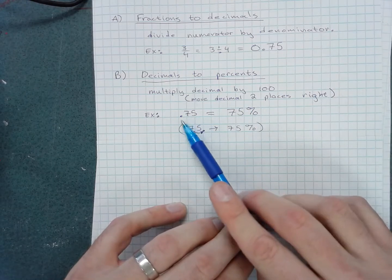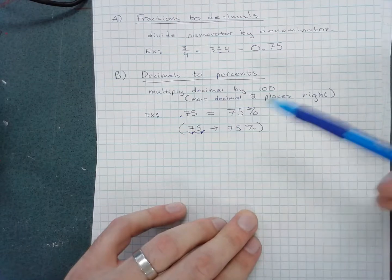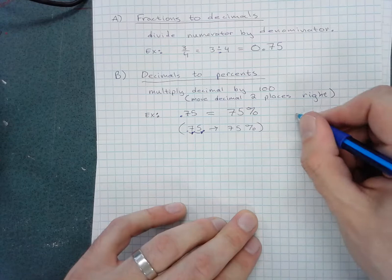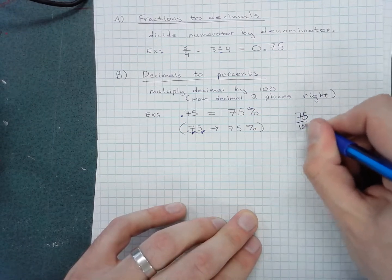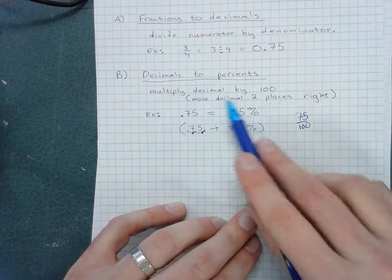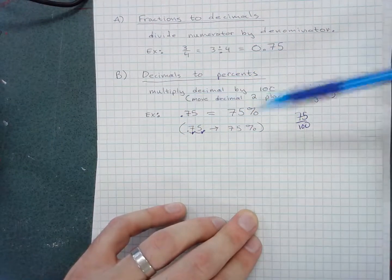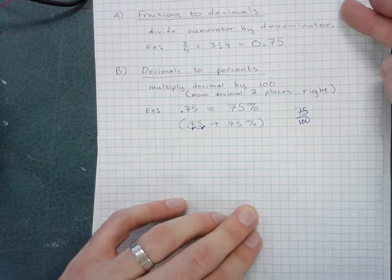For example, 0.75 is another way of saying 75 hundredths. So 75 hundredths is 75 percent. Percent, once again, means per 100. To convert from decimals to percents, move the decimal place two places to the right.